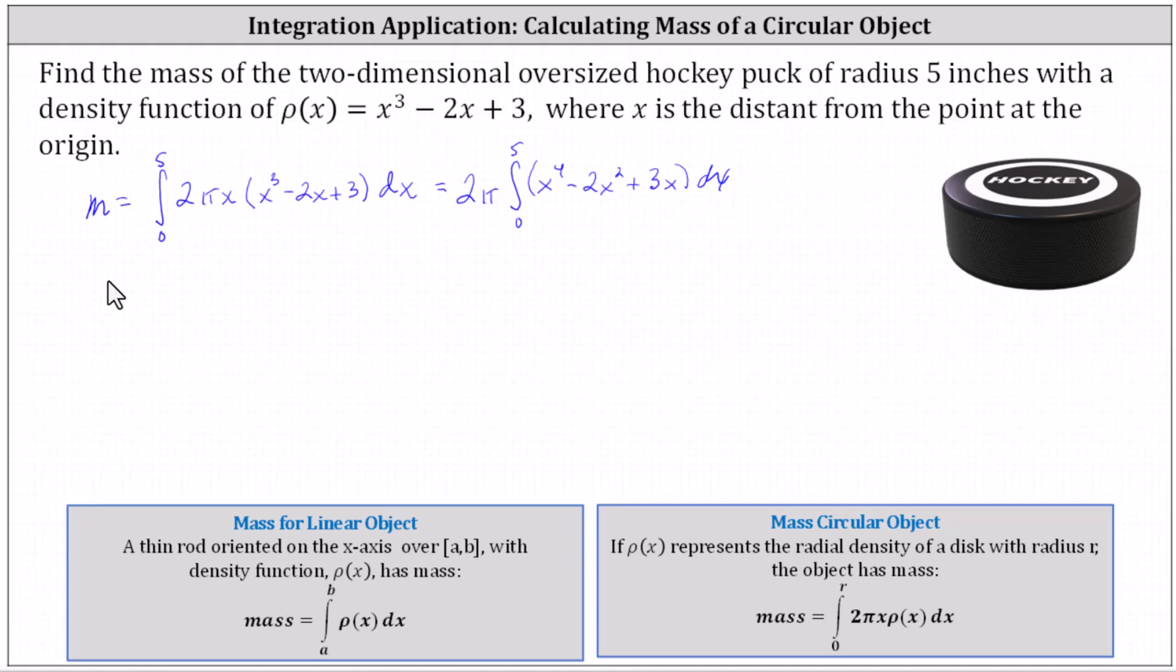And now let's determine the antiderivative. Integrating x⁴ - 2x² + 3x, we have x⁵ divided by 5, or (1/5)x⁵.